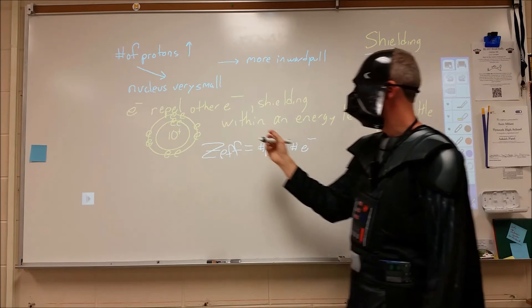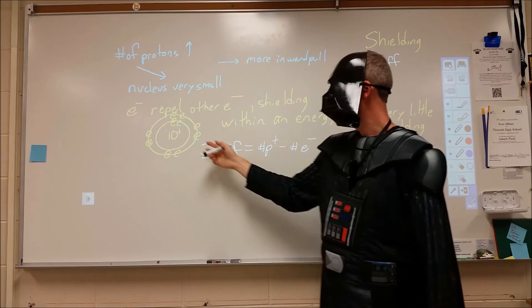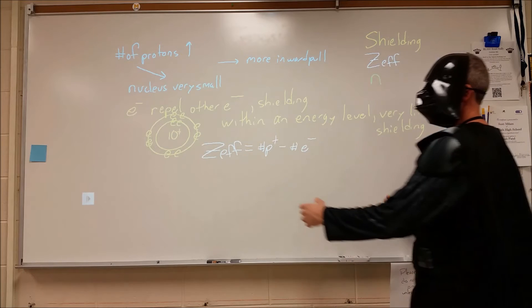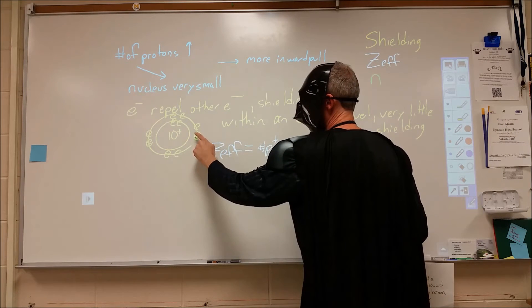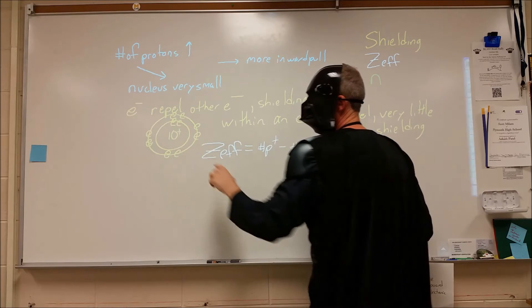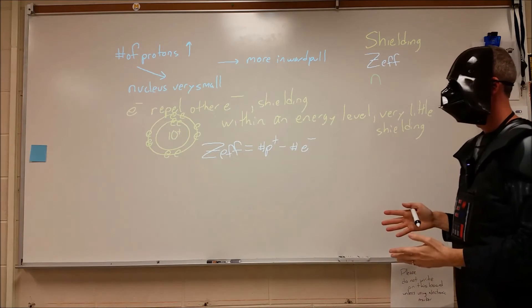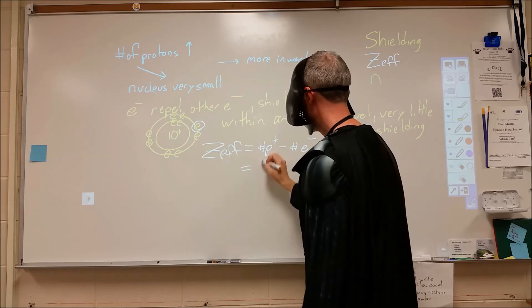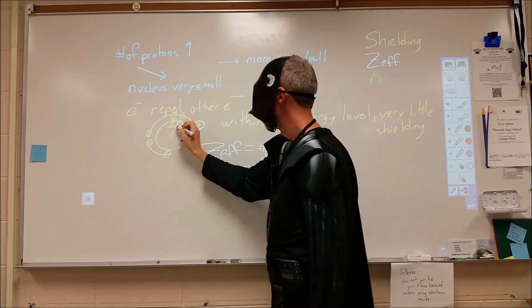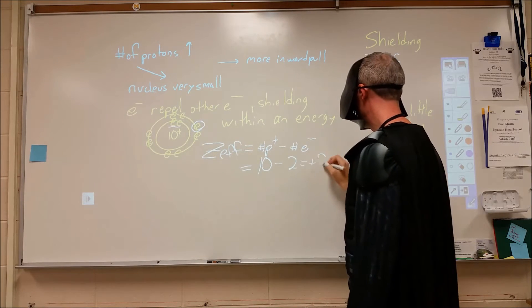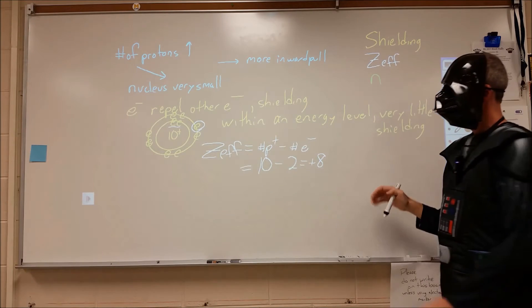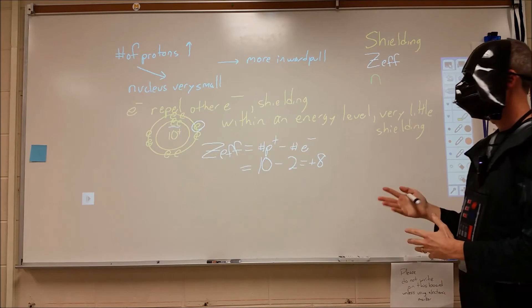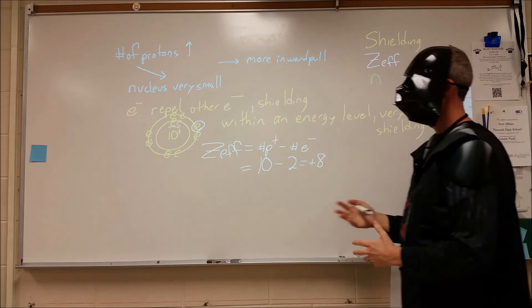Now the effective nuclear charge is designated towards a single electron. So we could describe the effective nuclear charge of this electron or this electron or some other electron. But once we choose an electron, what we then do is we count up how many protons there are and then we count up all the electrons that are in lower energy levels. We plug those two numbers in. So in this case, our effective nuclear charge of this electron here would be equal to ten protons minus two shielding electrons for a total of plus eight. So effective nuclear charge combines the attraction and repulsion on that electron into a single term. And that's very useful for us to go ahead and describe what's going on within periodic trends.